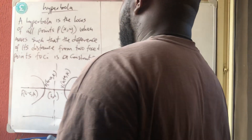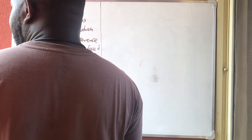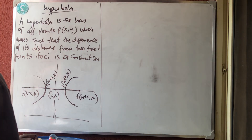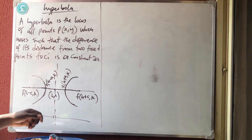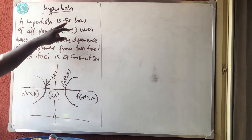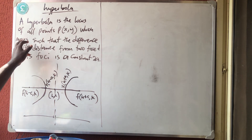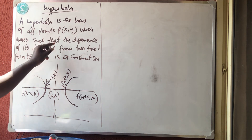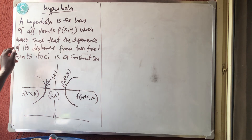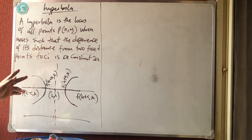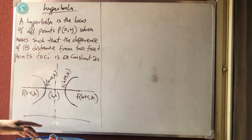Good afternoon and welcome to Master Talker online class. Today we'll be talking about hyperbola. A hyperbola is the locus of all points (X, Y) which moves such that the difference of each distance from two fixed points — the foci — is a constant.